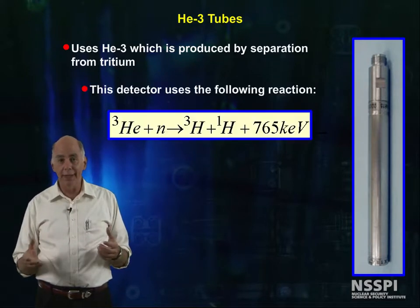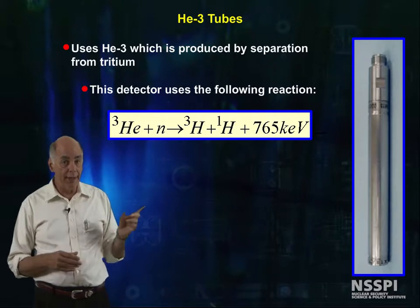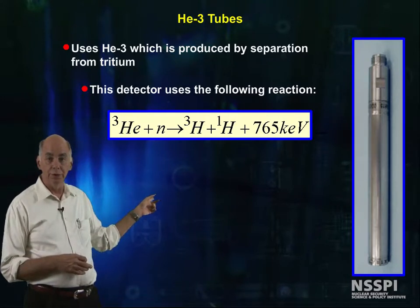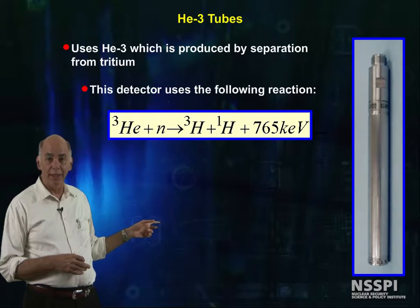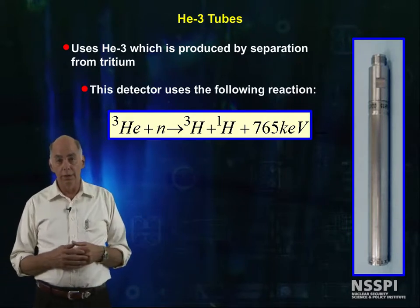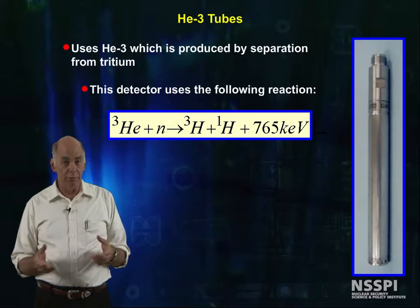Helium-3 detectors use the following reaction. Helium-3 plus a neutron goes to tritium plus a proton with some 765 keV of kinetic energy in the products.